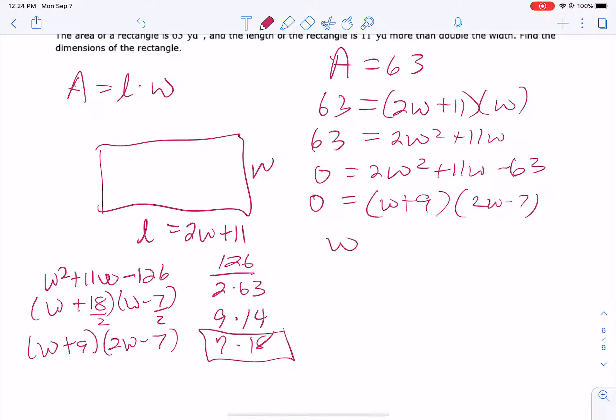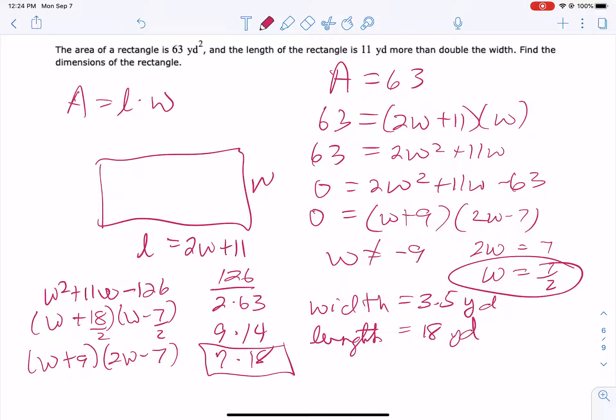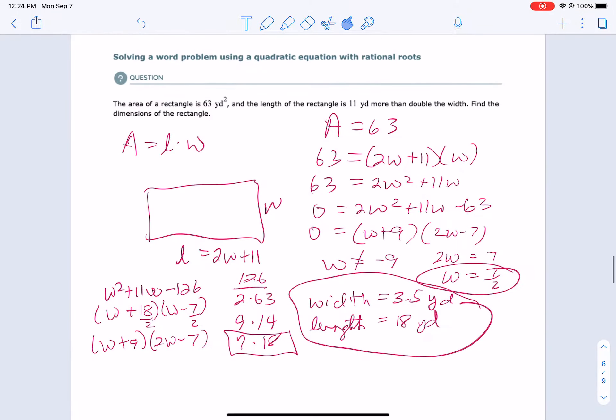Now we're going to solve. We get w equals negative 9. No, it's a width, so we're going to throw that out. Or 2w equals 7, so w equals 7 over 2. That's the one we want. So our width is 3.5 yards, 7 over 2. And our length, we're going to double that, which would be 7 plus 11. So our length is 18. Now the way that we could check, 18 times 3.5 better be that 63 that they were talking about. And it is. So we are done. So there is a word problem.